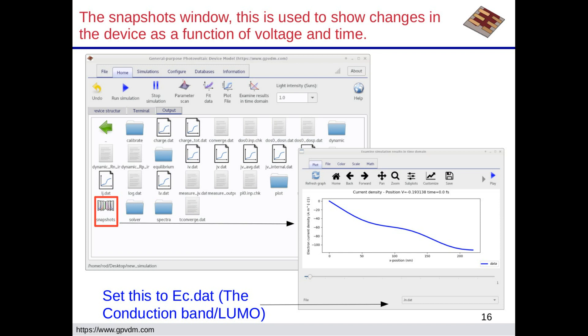All the outputs into the snapshots folder. And that's actually just a physical folder on your disk. And if you select JN, JN is the electron holder. If you change this to EC, that's going to be the conduction band or the LUMO.